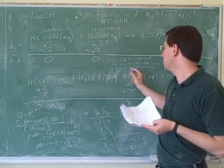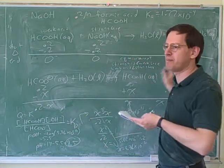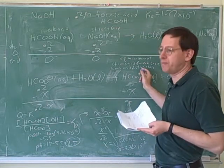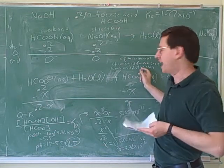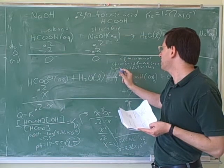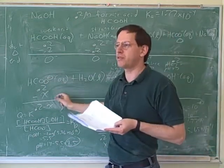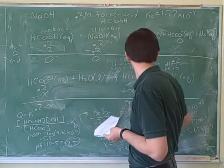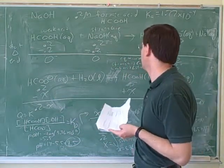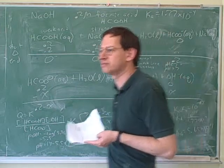That explains why, when you titrate a weak acid in a strong base, you're going to end up basic. The strong base will completely disappear, because it's going to completely react, and it's going to turn the weak acid into an equal amount of its weak conjugate base. And then the weak conjugate base will go through this reaction and make the solution basic, producing hydroxide ions. So that's the explanation for the rules that we were just memorizing a second ago.